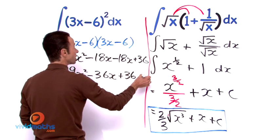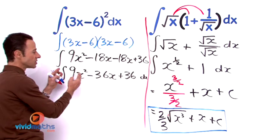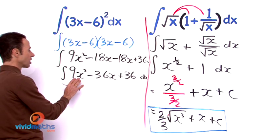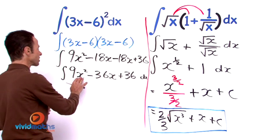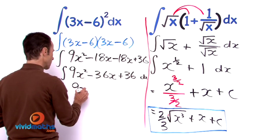So let's do the first part. Let's raise the power. It is 9x squared, let's raise it up, that would be 9x cubed on 3 minus 36x squared all over 2 plus 36x.